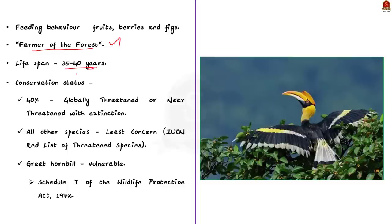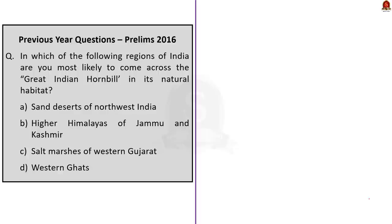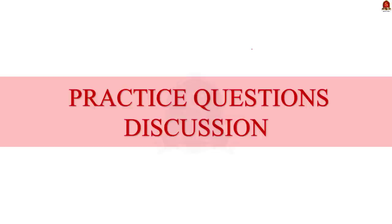Regarding conservation status, currently 26 out of 62 species — at least 40% of hornbills — are globally threatened or near-threatened with extinction. All other species are listed as least concerned according to the IUCN Red List. The Great Hornbill is evaluated as vulnerable and is protected at the highest level under Schedule 1 of the Wildlife Protection Act 1972. Today we have six practice questions: four will be discussed and two are quiz questions.